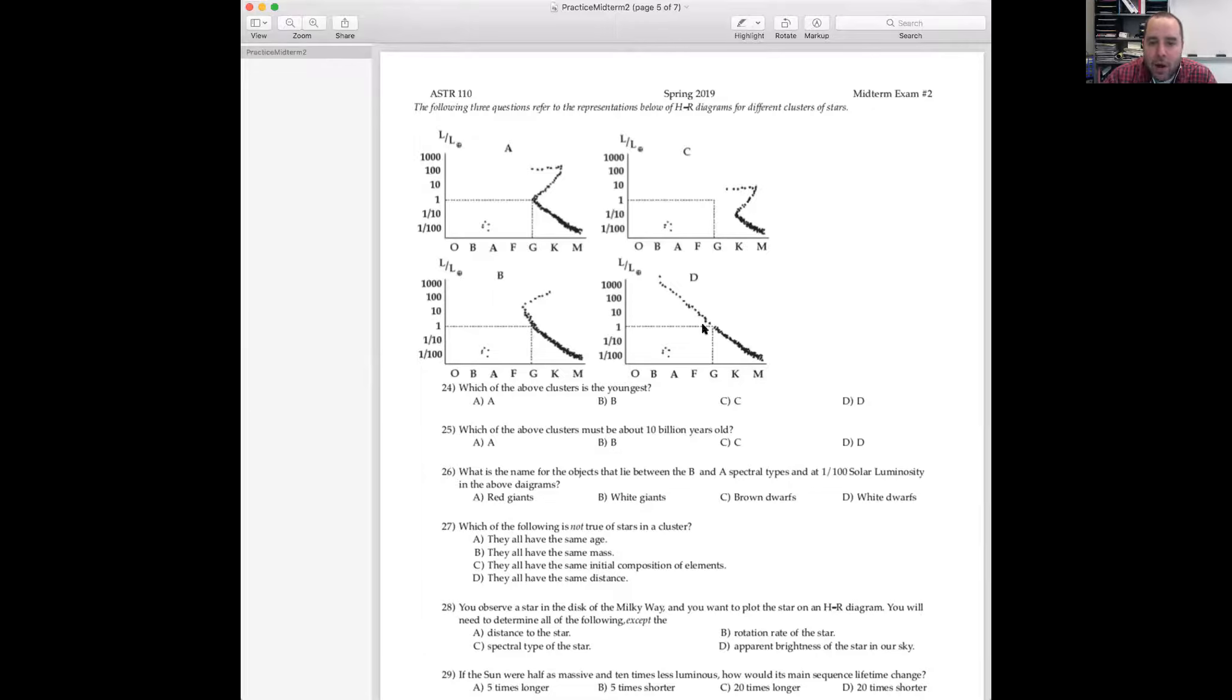And we can do that by figuring out where the main sequence turnoff is. If you look at cluster D over here, it has almost all of these stars on the main sequence. So these stars at the very top are on the main sequence, stars at the very bottom are on the main sequence. I just got a 10 minute warning on my Zoom meeting. These stars at the top are the very massive stars. They live very short lives. D must be a very young cluster because these stars are still on the main sequence.